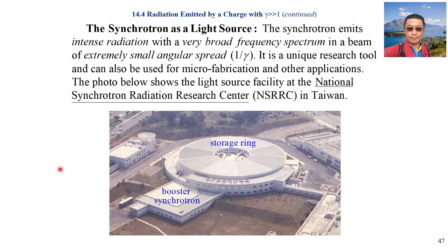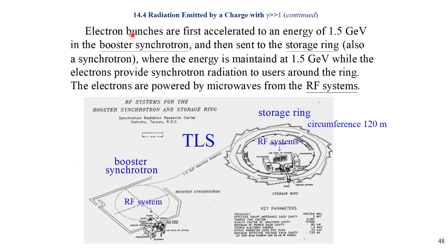Electron bunches are first accelerated to an energy of 1.5 GeV in a booster synchrotron, and then sent to the storage ring. That is the booster synchrotron RF system to accelerate the particles, where the energy is maintained at 1.5 GeV while the electrons provide synchrotron radiation to users around the ring.